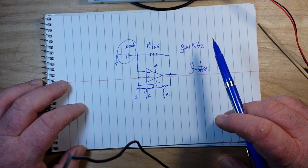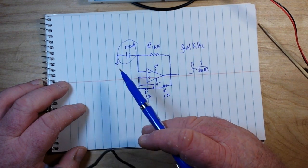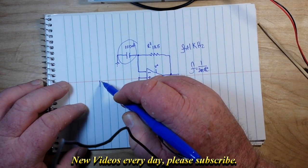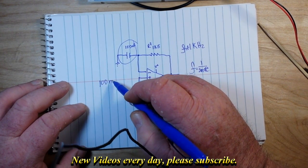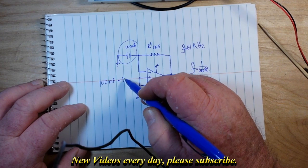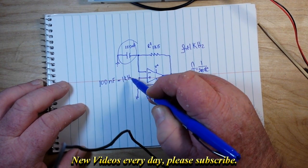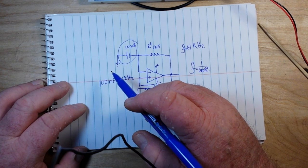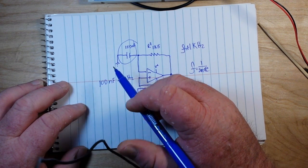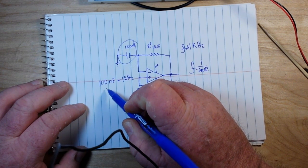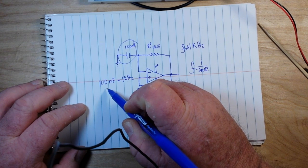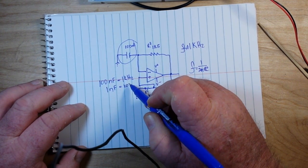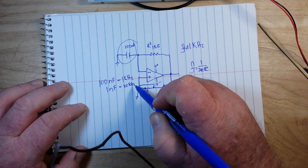So we have the 100 nanofarad capacitor in here giving us 1k. So we say 100 nanofarad equals 1 kilohertz. Now if we want 100 kilohertz, we would use 1 nanofarad equals 100 kilohertz.